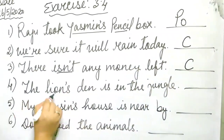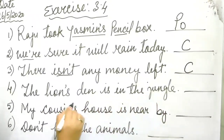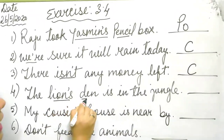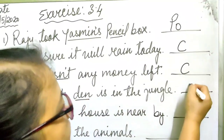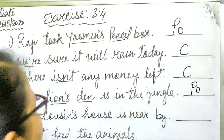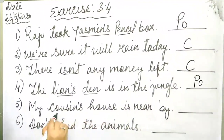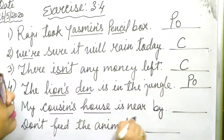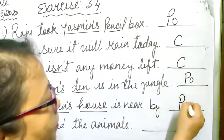The lion's den is in the jungle. Whose den? The lion's den. So what sentence is this? Possessive — P-O. My cousin's house — whose house? My cousin's house. Possessive — P-O.